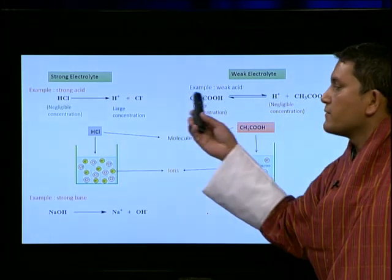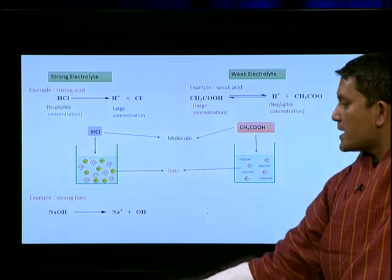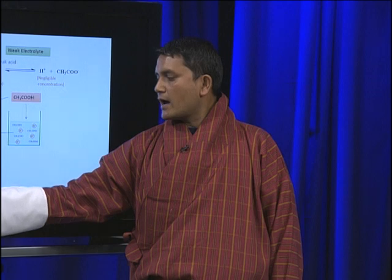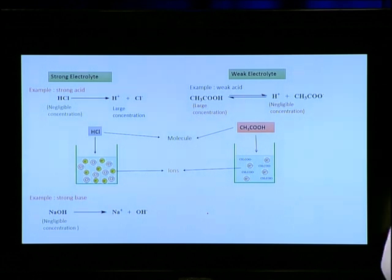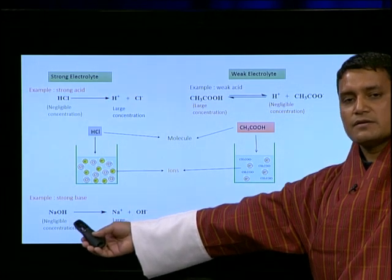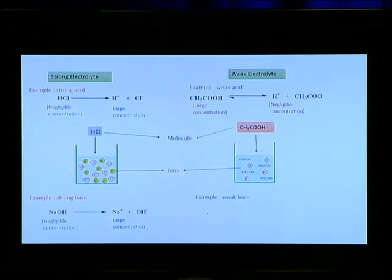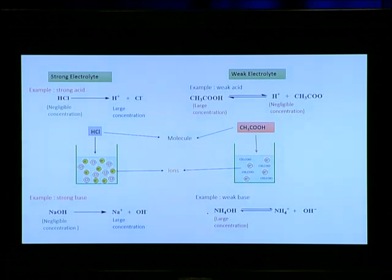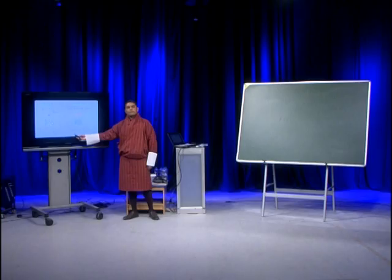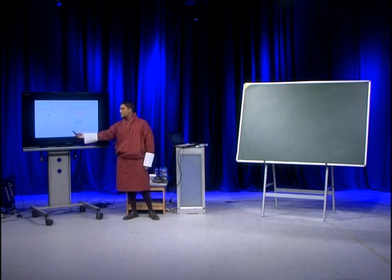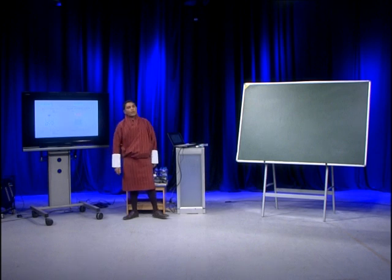HCl is a strong acid and acetic acid is a weak acid. For an example of a strong base, sodium hydroxide dissolved in water forms sodium ions and OH⁻ ions, and we have a larger concentration of dissociated ions than undissociated molecules, so it is a strong base. A weak base like ammonium hydroxide also dissociates to give OH⁻ and ammonium ions, but there is a larger concentration of undissociated molecules compared to dissociated ions, so ammonium hydroxide is a weak base.